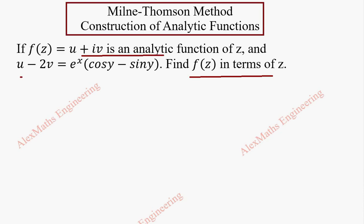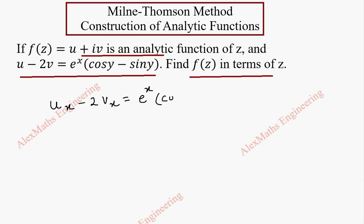The given expression is u minus 2v equal to e^x times (cos y minus sin y). Now let's take the equation and do the partial derivative with respect to x. So ux minus 2vx becomes e^x — the derivative of e^x is e^x and all the y terms are constants, so we keep them as they are. This is our first expression.